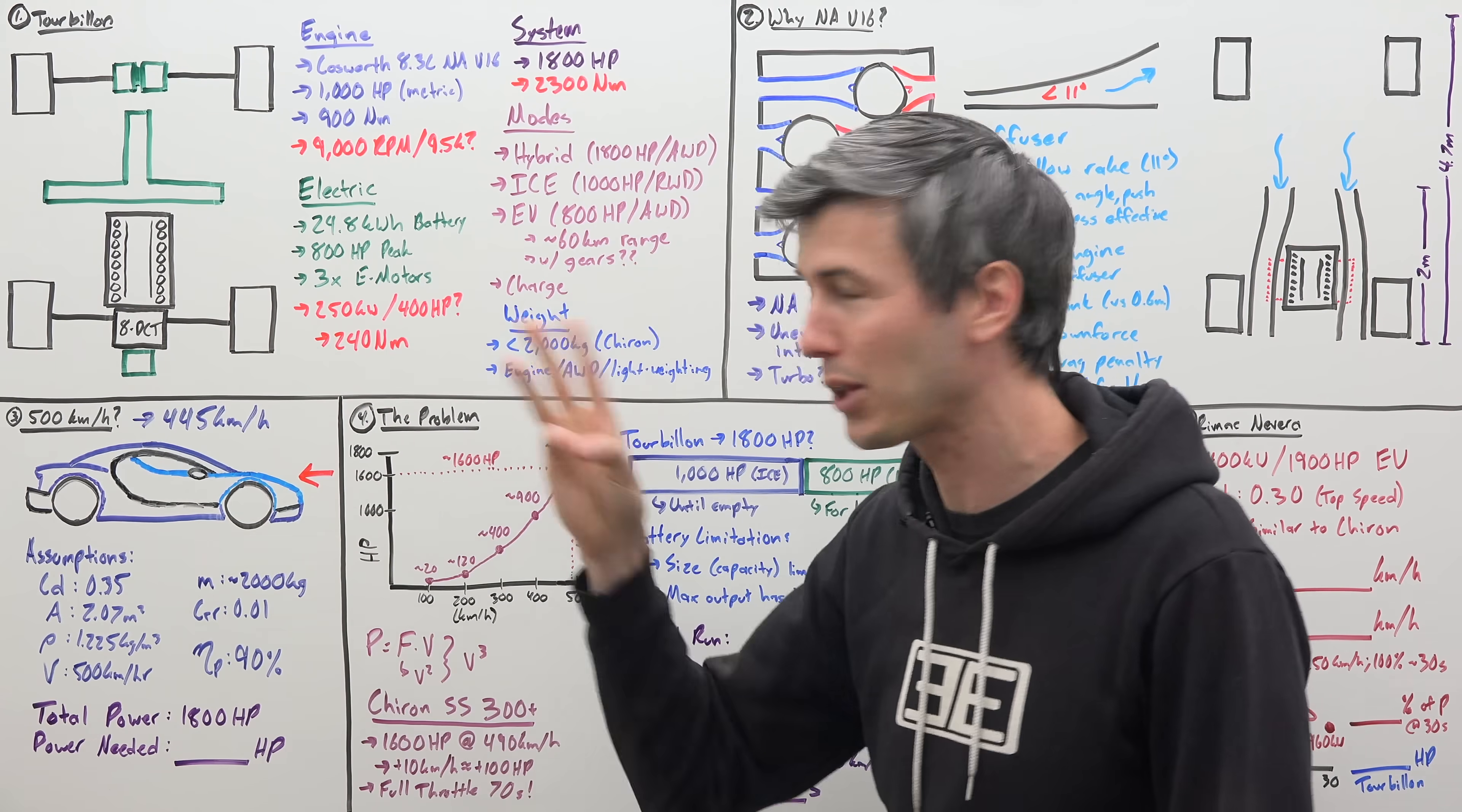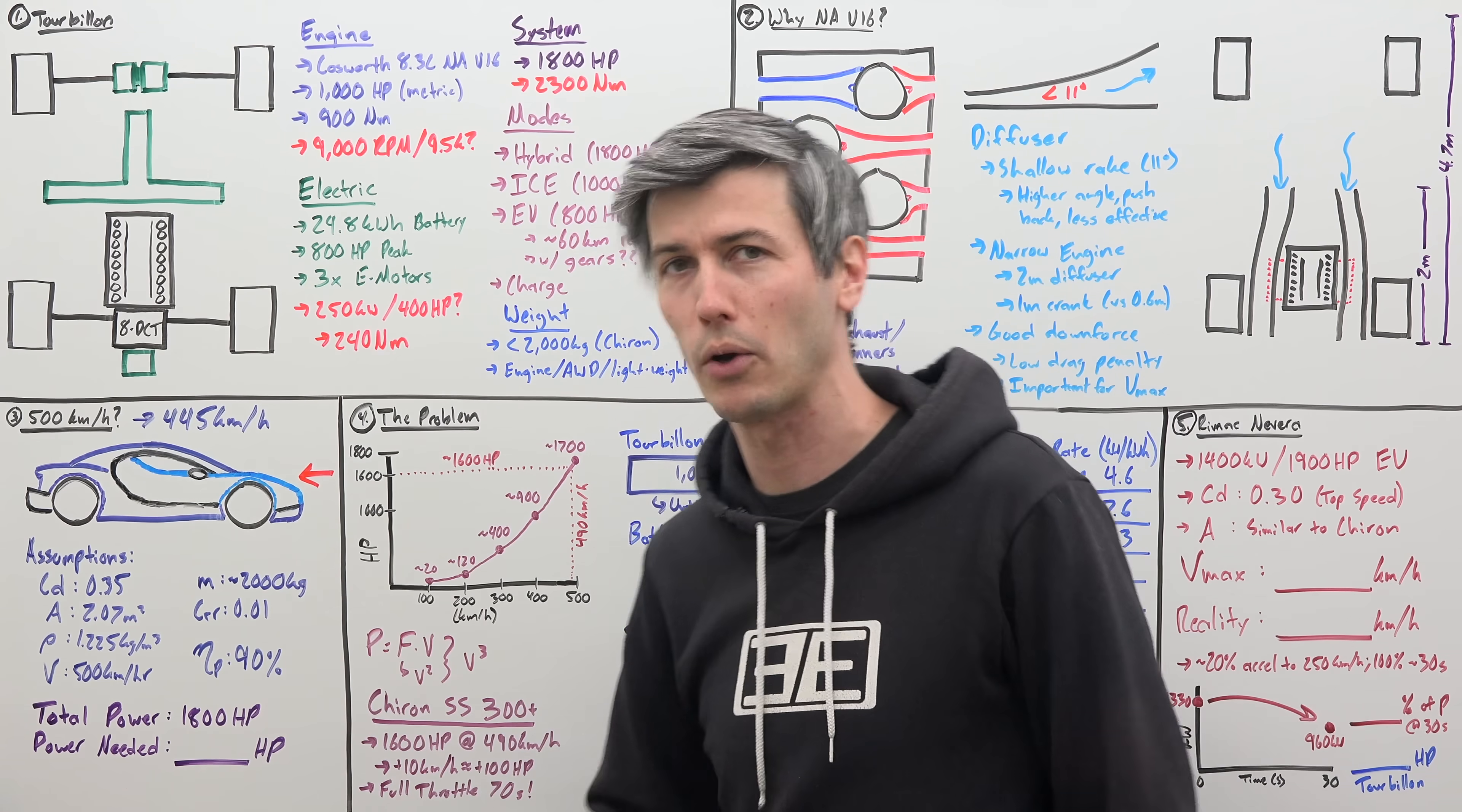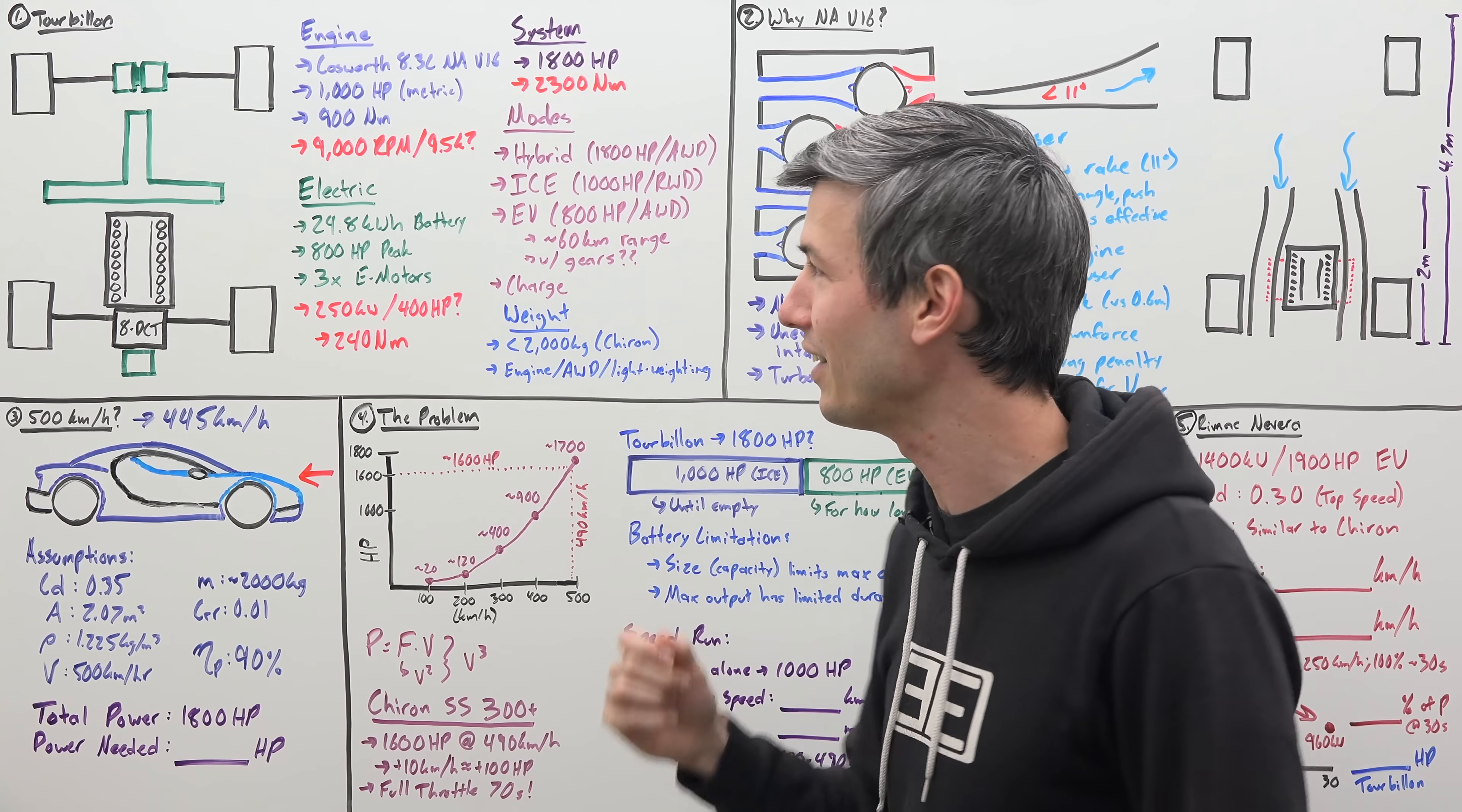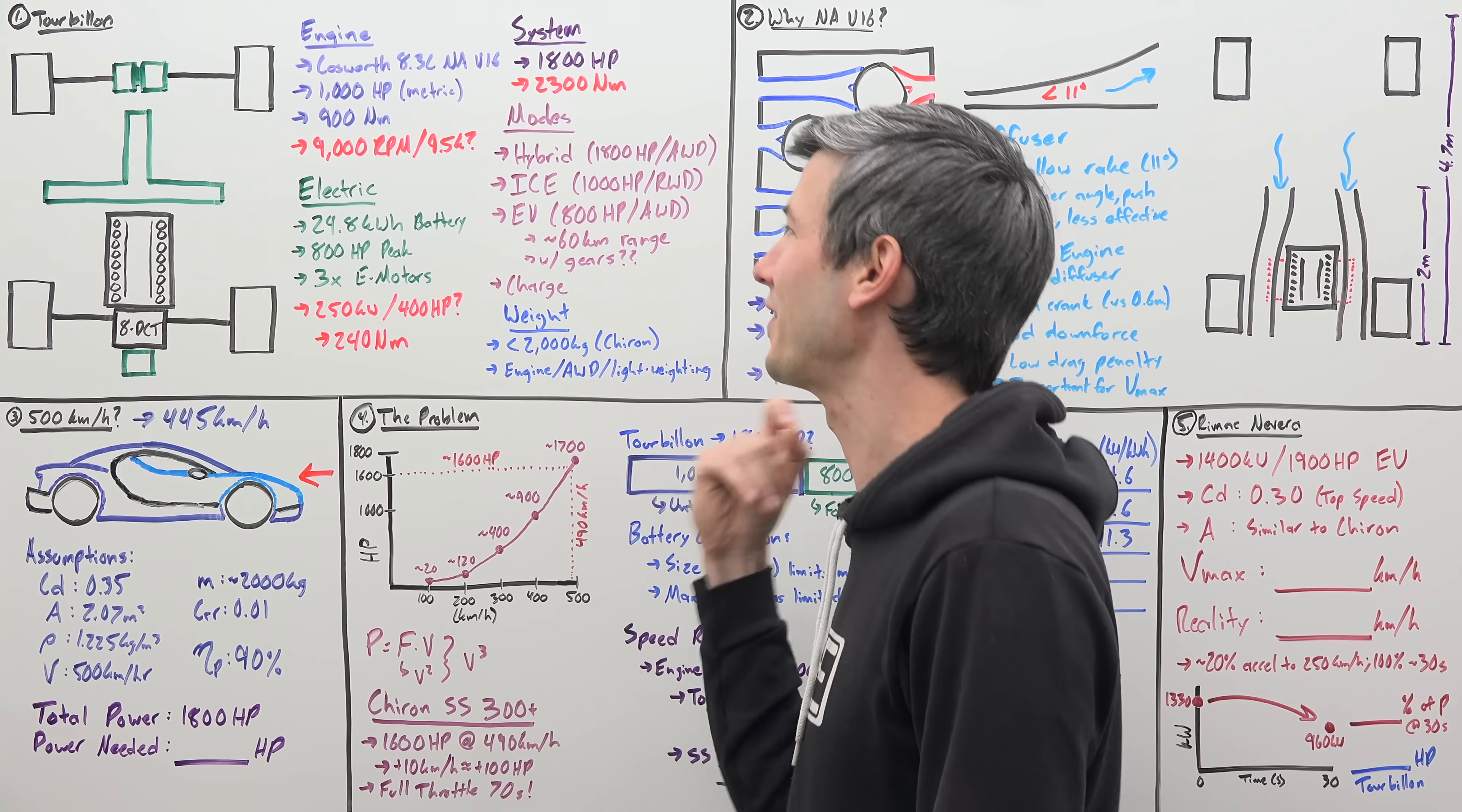Cosworth is just the name of the game these days. Really cool to see another one of their high revving applications in a hypercar. And we've got that matched up with an 8-speed dual clutch transmission. And finally, on the back of that, another, yes, the third electric motor. So three electric motors, plus an 8.3 liter naturally aspirated V16 engine.